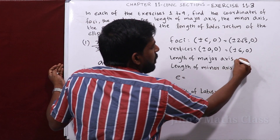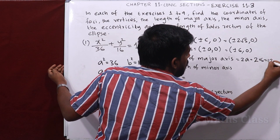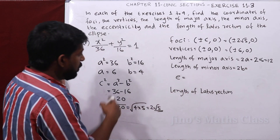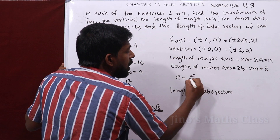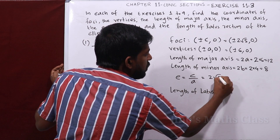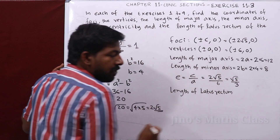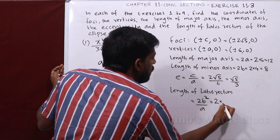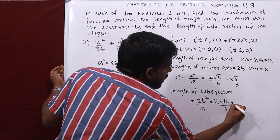The length of the major axis is 2a = 2×6 = 12. The length of the minor axis is 2b = 2×4 = 8. The eccentricity is c/a = 2√5/6 = √5/3. The length of the latus rectum is 2b²/a = 2×16/6 = 16/3.